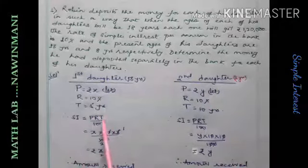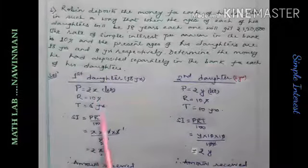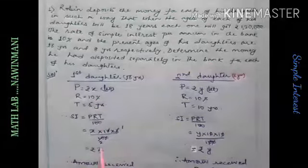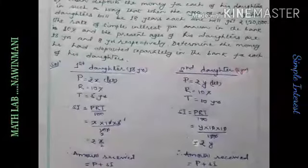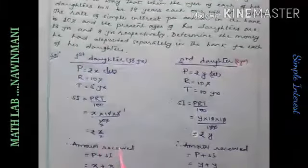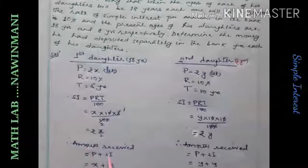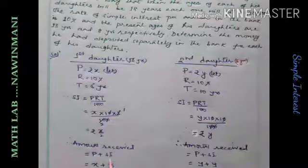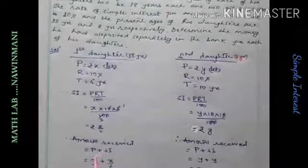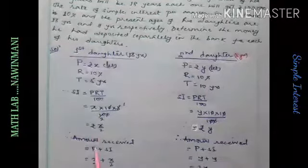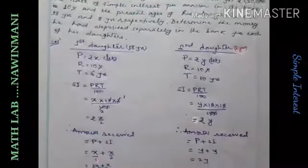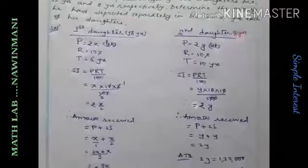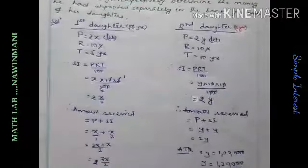Here we are going to get 1,20,000. So, using PRT equals 100, you can calculate what will be the SI. SI will be X by 2. And then amount received? Amount is Principal plus interest. Principal is x rupees. Simple interest is x by 2. So, take LCM. And then you will get 3x by 2 rupees.